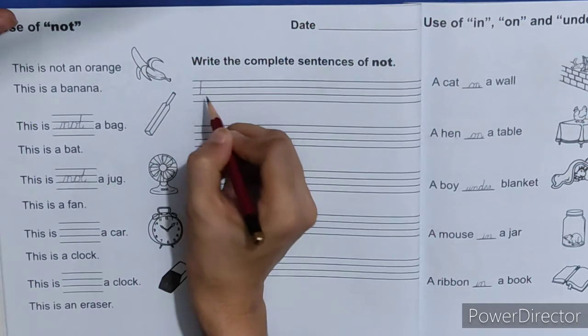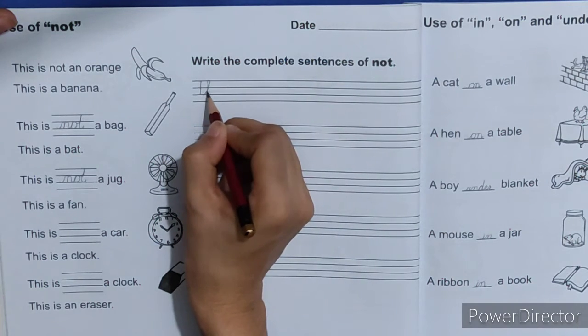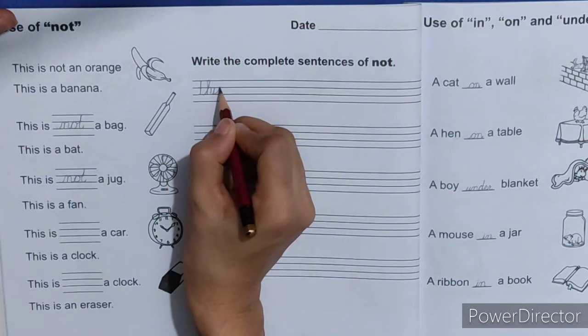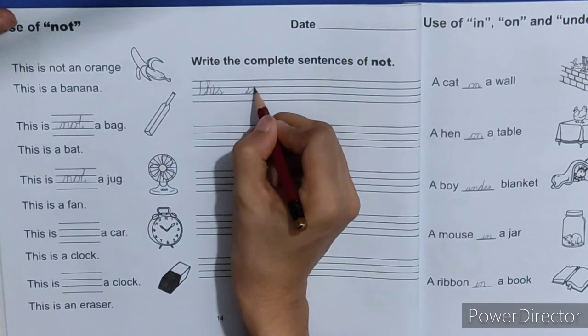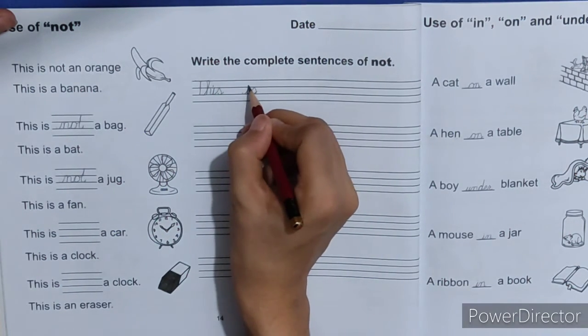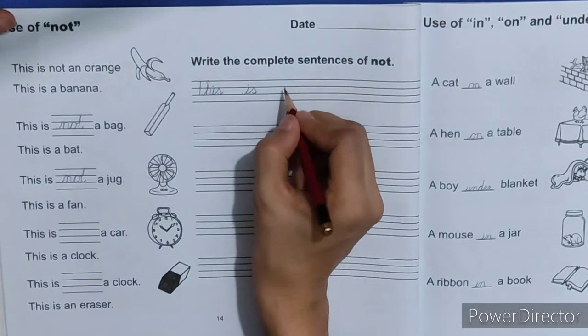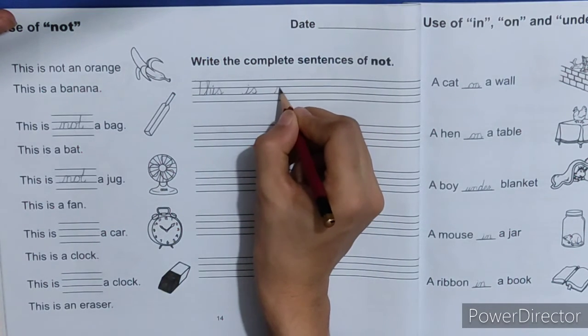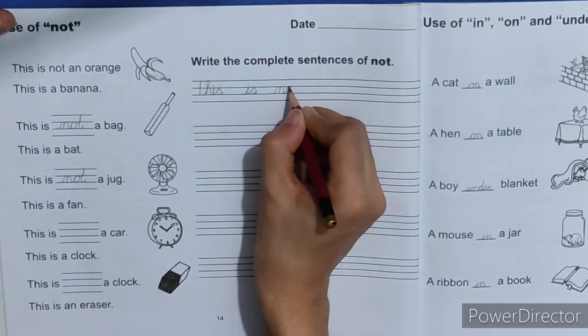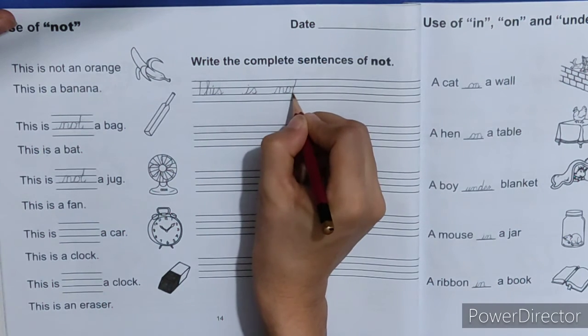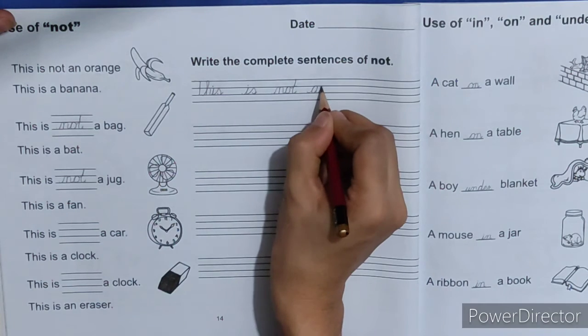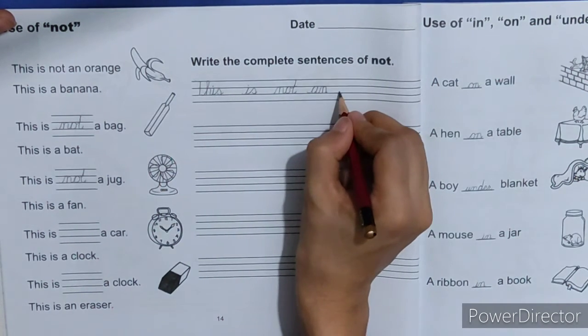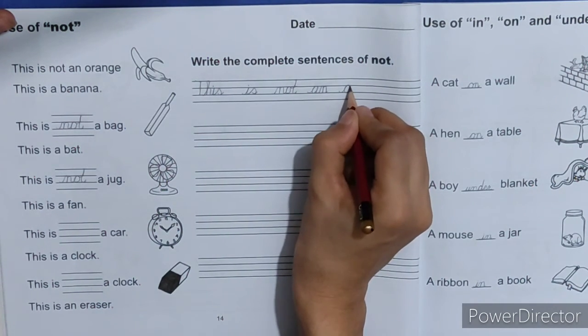This... is... aapne košish karna hi hai khi one time may need likhe taakki aapko erase na karna pade... not... an... orange... orange.